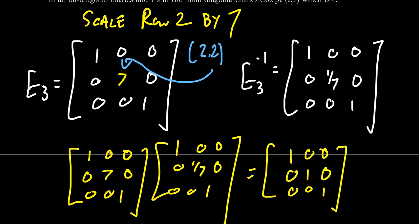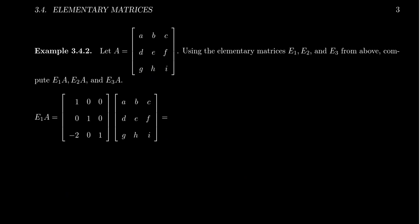We've now talked about the three different types of elementary matrices, which correspond to elementary row operations. It turns out that multiplying by an elementary matrix has an interesting effect on matrices. Let's take a generic 3x3 matrix A with entries a, b, c, d, e, f, g, h, i and multiply it by the three elementary matrices we considered.